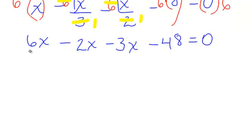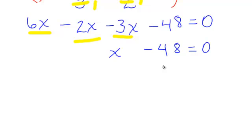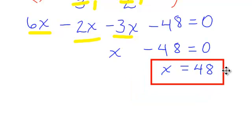Let's combine our like terms. That will simply be x, so I will have x minus 48 equals 0. You're going to add 48 to both sides, so x equals 48. I should check my answer — I didn't have any variables in the denominator or any radicals involved, but I checked and x equals 48 will make that equation true.